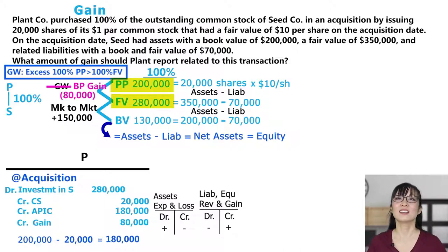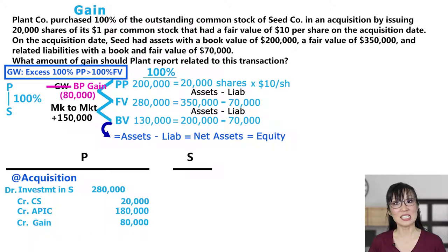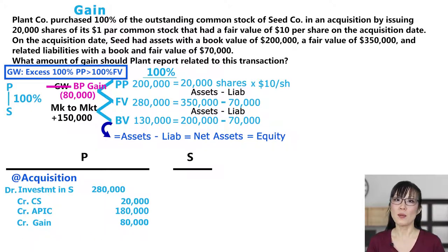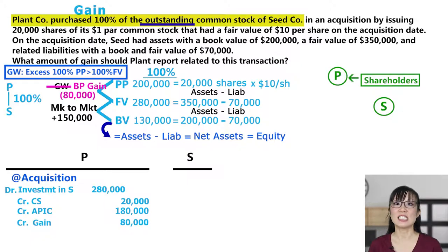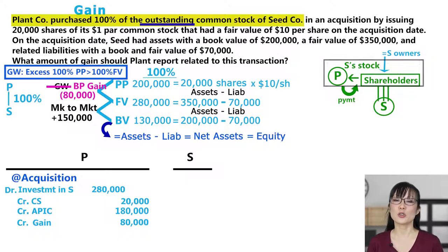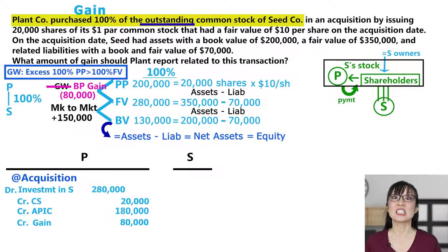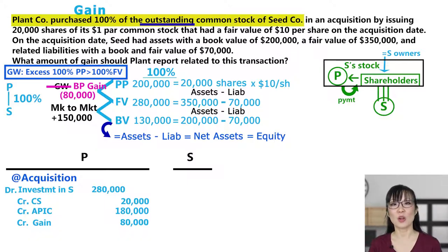What does Seed record? Did Seed give or get anything in this transaction? The prompt says Plant purchased the outstanding stock of Seed — it does not say Seed issued stock. Plant bought Seed shares from Seed's shareholders. It was a transaction between Plant and Seed's shareholders — this has nothing to do with Seed. That means Seed records nothing.